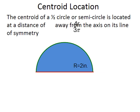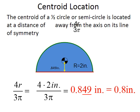We know the centroid for a circle is right in the middle. But what about a semicircle? A semicircle has a simple formula: 4 times the radius over 3π.